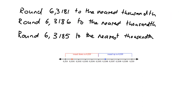Let's finish up by looking at rounding to the nearest thousandth. If we want to round 6.3181 to the nearest thousandth, we're focusing on the thousandths position. We know we've got 6.318 below and 6.319 above, with 6.3185 as the midpoint. We look at the number just to the right of that thousandths digit — it's a 1, so it is below the midpoint, and so we're going to round down to 6.318.